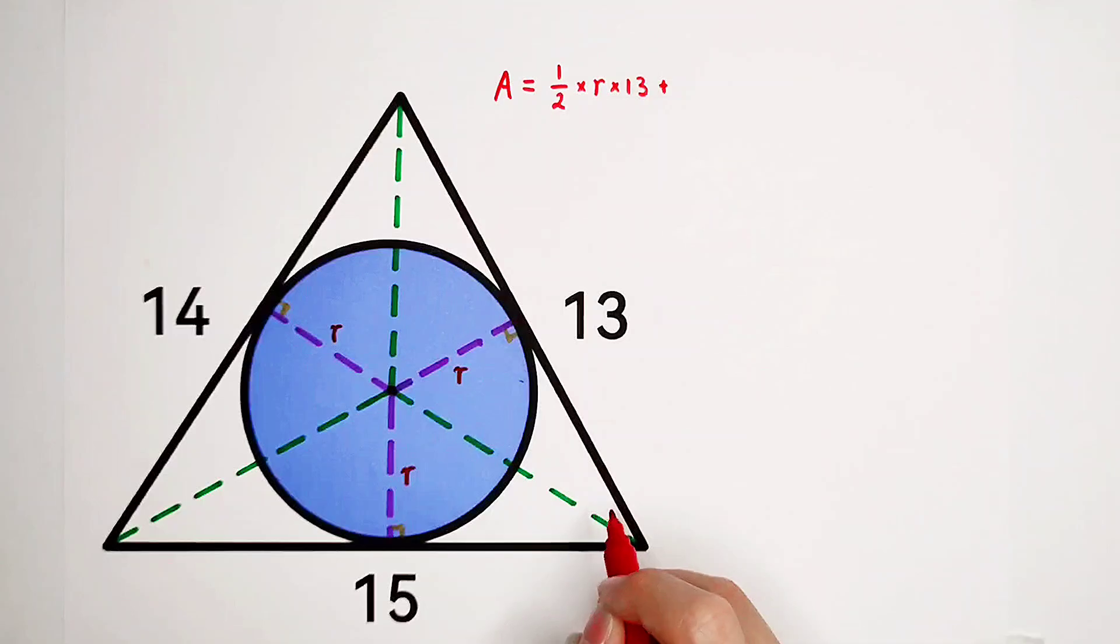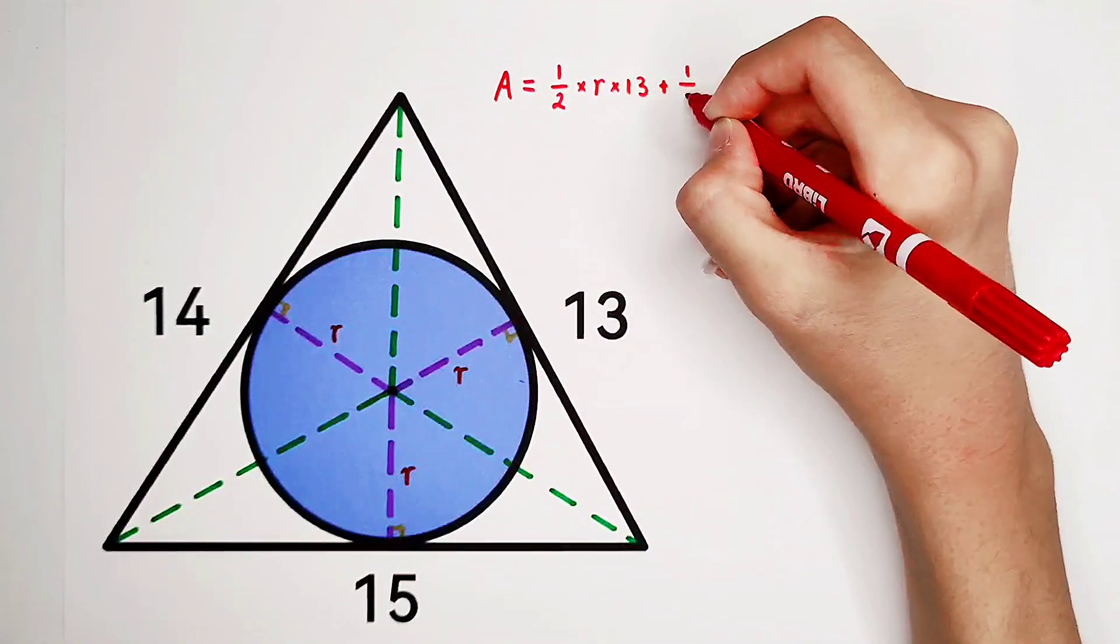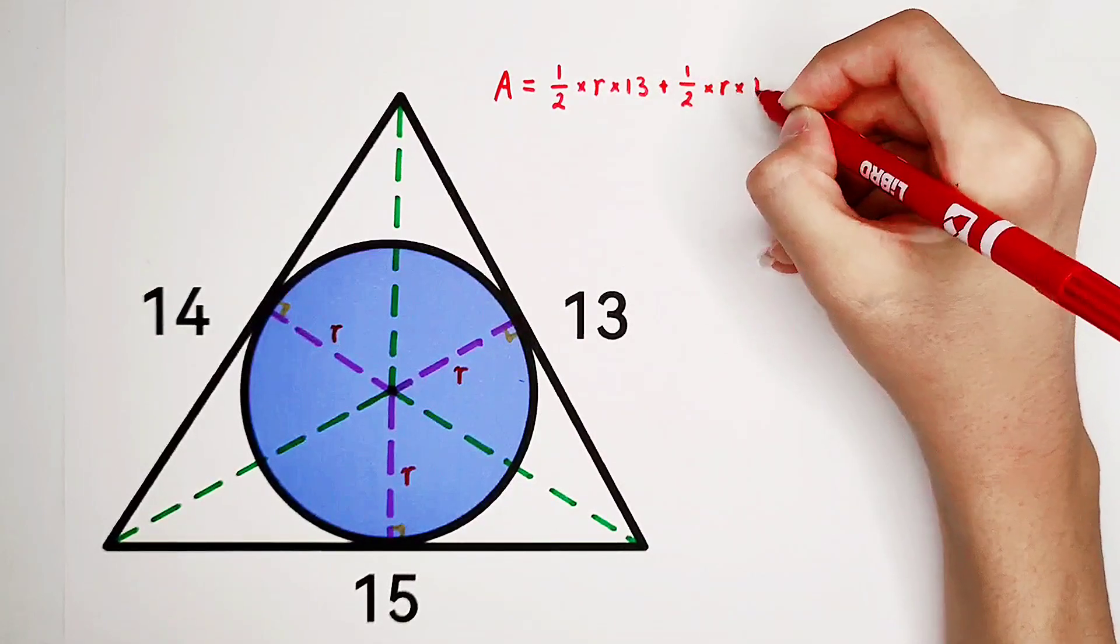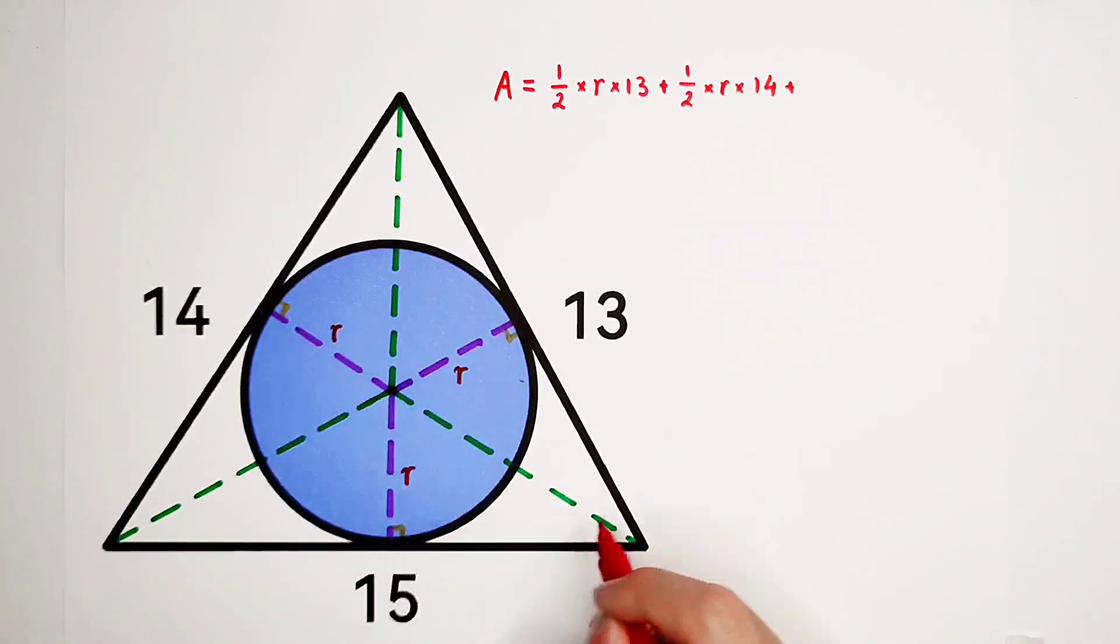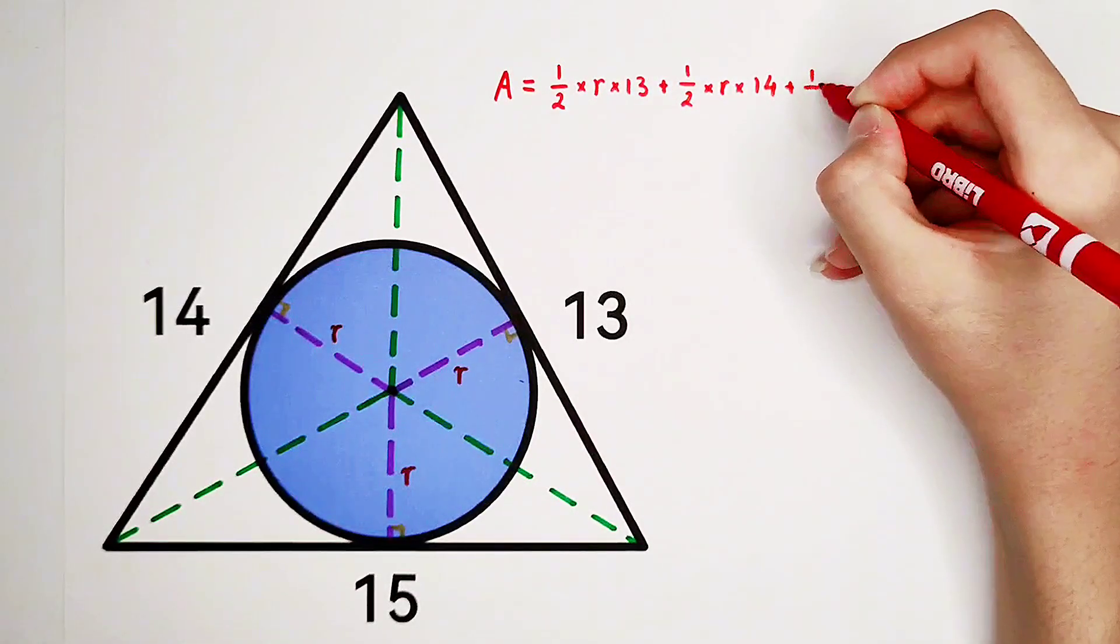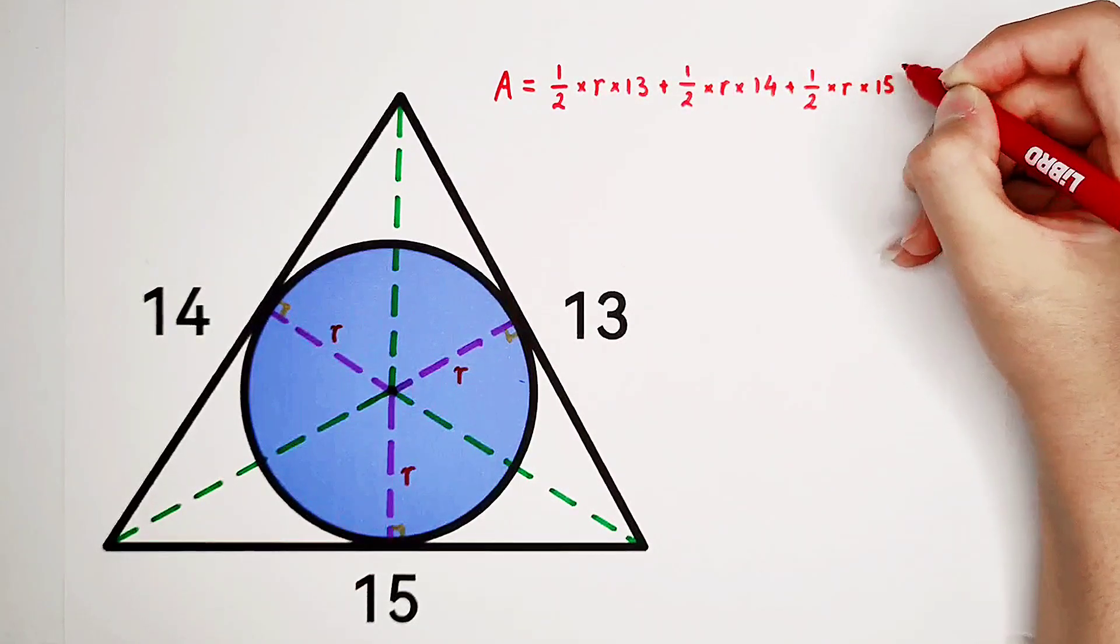Plus the area of this small triangle, it is 1 over 2 times R times 14. Then plus the area of this small triangle, 1 over 2 times R times 15.